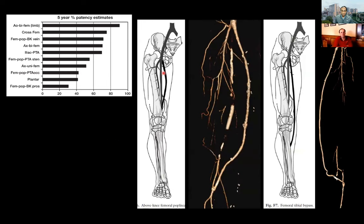In the lower extremity, femoral-popliteal bypasses are frequent — extending from the common or more frequently the superficial femoral artery down to either the below-knee or above-knee popliteal artery, depending on where the disease is. More rarely, you may see femoral-tibial bypass if the popliteal artery is not a suitable target for revascularization.